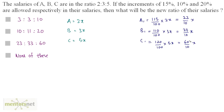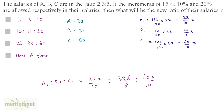I have purposely not cancelled the terms here. Now we calculate the ratio of new salaries: A1:B1:C1 = 23x/10 : 33x/10 : 60x/10. The x cancels out and multiplying all three terms by 10, the 10s also cancel, so the ratio is 23:33:60. So option C is the correct answer.